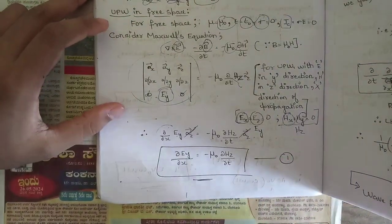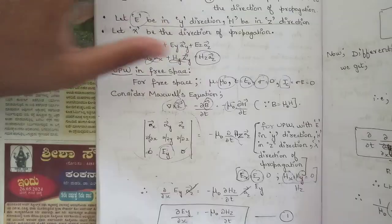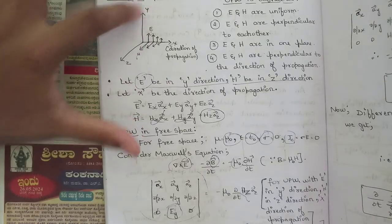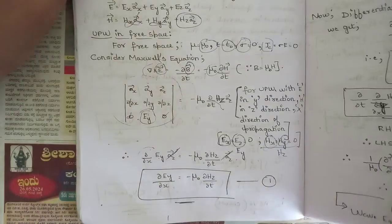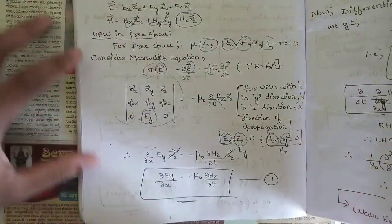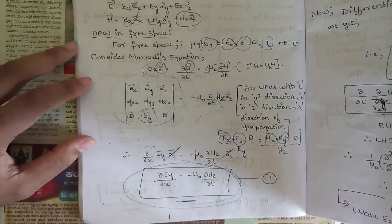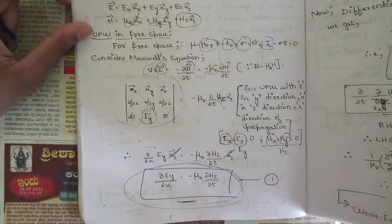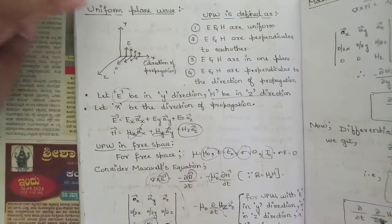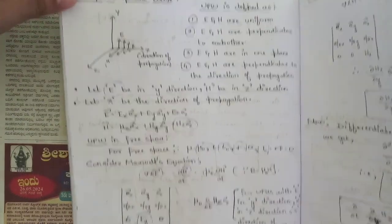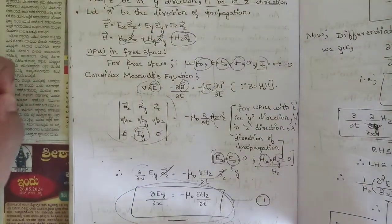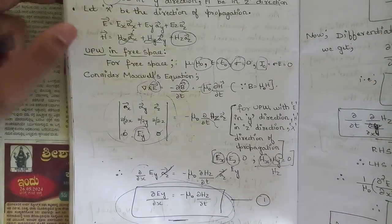This plane wave equation is obtained by considering E in the y-direction and H in the z-direction, with x as the direction of propagation, using Maxwell's equation for a uniform plane wave in free space. This equation is named Equation 1. For a 10-mark question, further derivation steps follow from here, but for uniform plane wave propagation alone, this one page is sufficient.